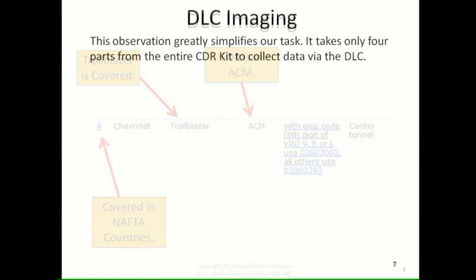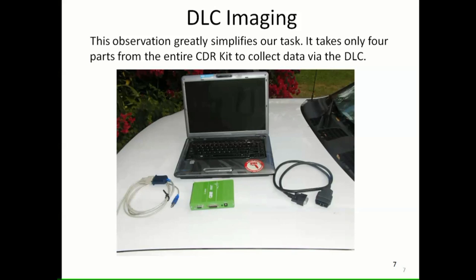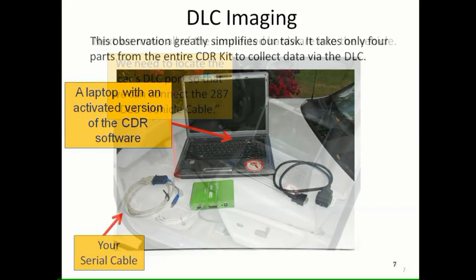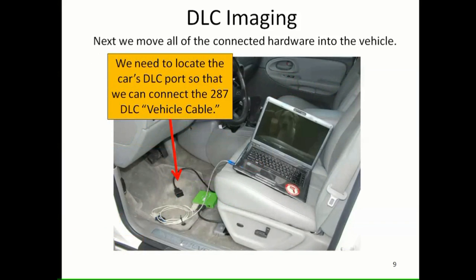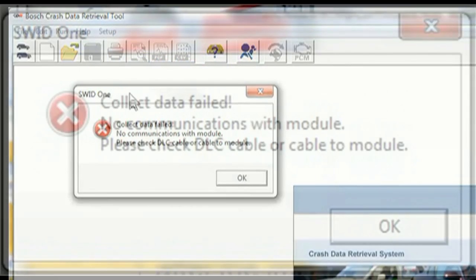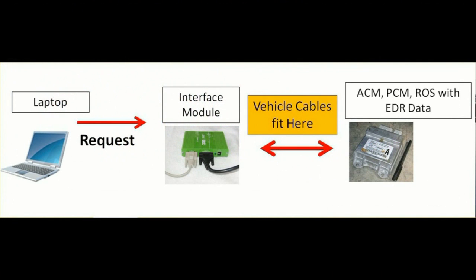It takes four parts from the entire CDR kit to collect data via the DLC. The first part is a laptop with an activated version of the software. We need to locate the car's DLC port so that we can connect the free end. I get an error screen and we'll drag it up here so we can see it — those are both vehicle cables, consistent with the observations made earlier.